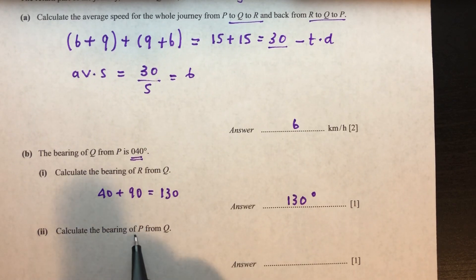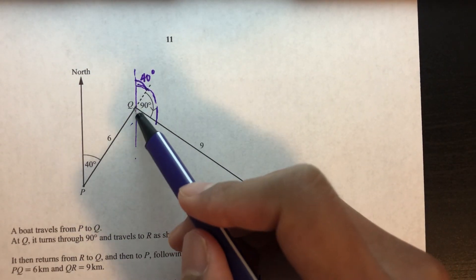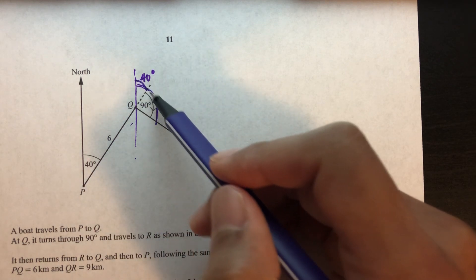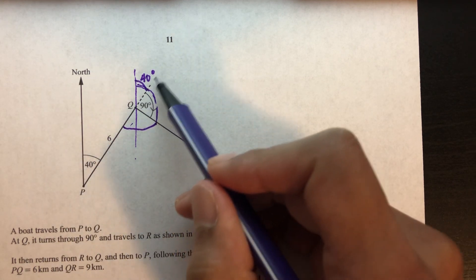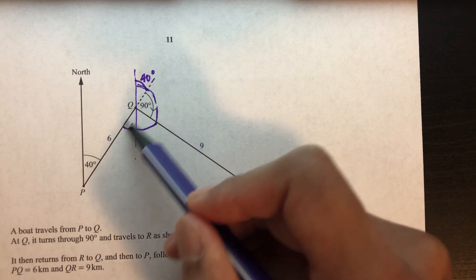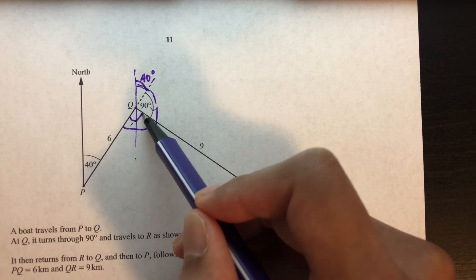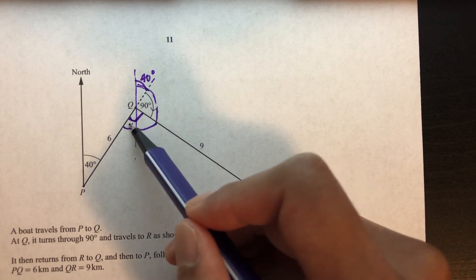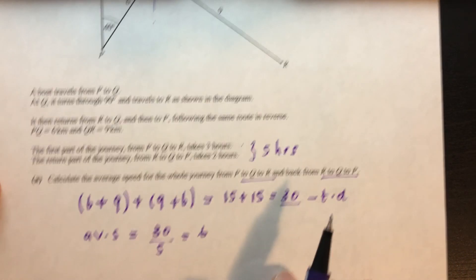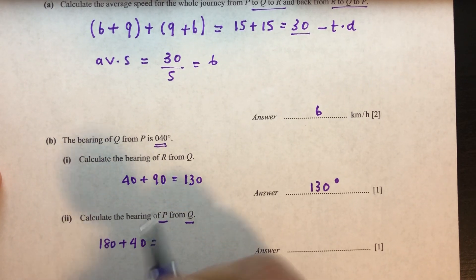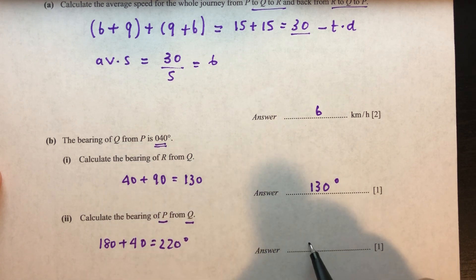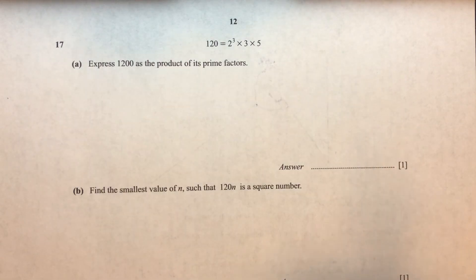Now calculate the bearing of P from Q. We need the angle from north at Q going to P. Since this is a straight line, the angle is 90 plus 90 equals 180, and with the alternate angle of 40, the bearing is 180 plus 40, which equals 220 degrees. So the bearing of P from Q is 220 degrees.